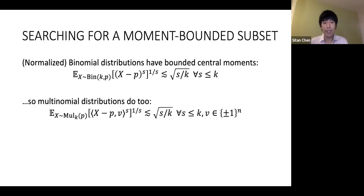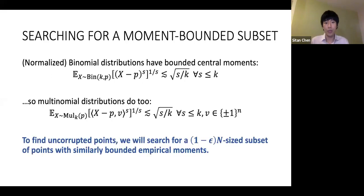This immediately implies that if I take any domain size and look at the multinomial distribution, and project it in any L∞ bounded direction v, then that projection is just a shifted and scaled binomial distribution, so it also satisfies sub-gaussian moments. This is our strategy moving forward: find a large enough subset of the points which have similarly bounded empirical moments.